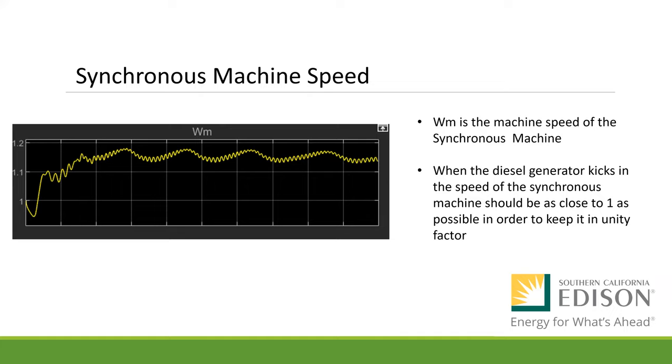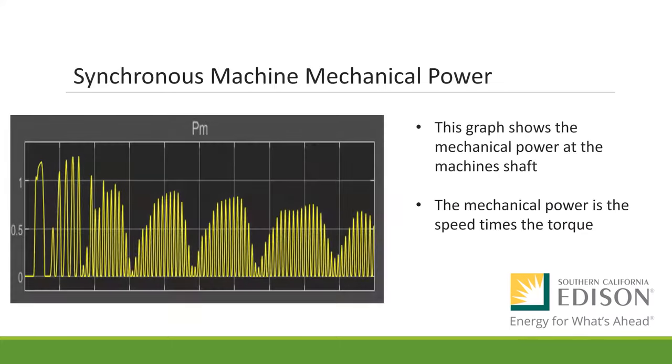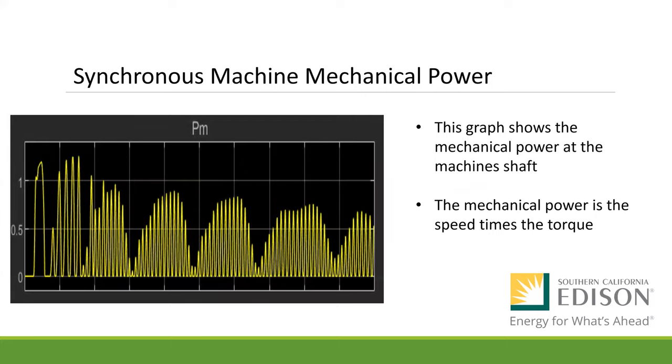Our WM is represented as the machine speed of a synchronous machine. When the diesel generator kicks in, the speed of the synchronous machine should be as close to one as possible to keep it in unity factor. The synchronous machine mechanical power can be expressed by using the shaft angular speed multiplied by the torque. By having a correct mechanical power output, we can determine and calculate the synchronous machine efficiency. The efficiency will reduce the losses mainly due to the resistive losses and windings, core losses, and mechanical losses in the bearings. On top of that, the improvement in efficiency reduces utility charges when it's connected to the grid, which is essential with designing a microgrid, and that will reduce our costs as much as possible.